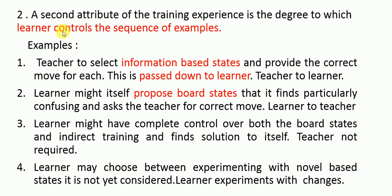The second attribute is the degree to which the learner controls the sequence of training examples. One scenario is where the teacher selects the board states and provides the correct move for each, which is then passed down to the learner. This is a teacher-to-learner direction, where the teacher decides the information based on board states and provides the correct move.